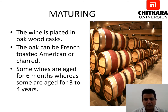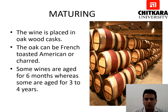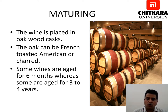The next step is maturing or ageing. The wine is placed in oak wood casks, which can be French, toasted, American, or charred. Some wines are aged for 6 months, whereas others are aged for 3 to 4 years — it depends on the wine maker or vineyard owner. This is how an oak wood cask looks; they are placed on top of one another so that proper symmetry is maintained throughout the vineyard.